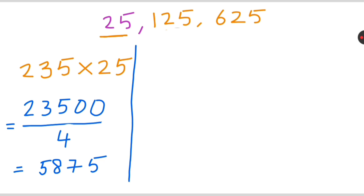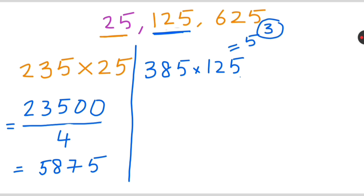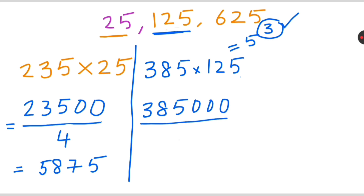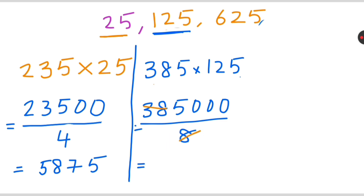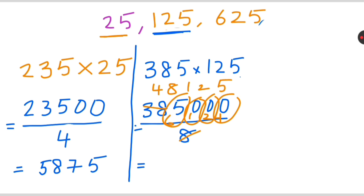Now let's see how to multiply by 125. Take the number 385 multiplied by 125. Since 125 is 5 raised to 4 of 3, the exponent is 3, so we write three zeros after 385 and divide by 2 raised to 4 of 3, which is 8. Dividing 385000 by 8: 8 times 4 is 32 remainder 6; 8 times 8 is 64 remainder 1; 8 times 1 is 8 remainder 2; 8 times 2 is 16 remainder 4; 8 times 5 is 40. So 385 times 125 is 48125.